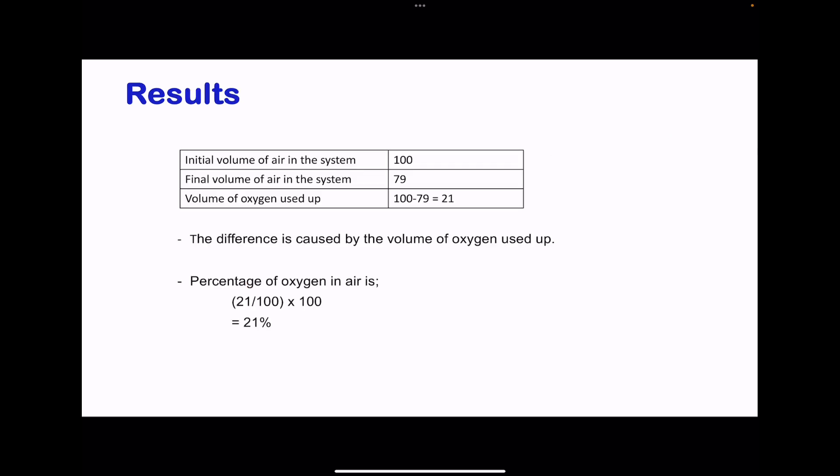For example, we can have results like here. Initially, if the volume was 100 centimeters cubed within the syringe, and at the end of the experiment, after we allow the apparatus to cool down, the volume is going to be 79. So, the difference is going to be the volume of oxygen, which is 100 minus 79, giving us 21. The percentage of oxygen in that air is going to be the 21 divided by the original times 100, giving us 21%.